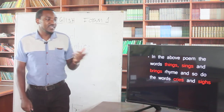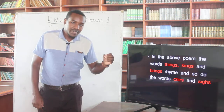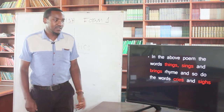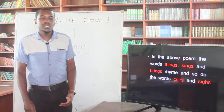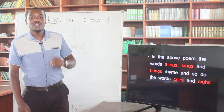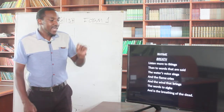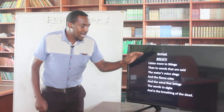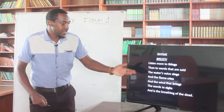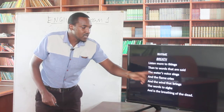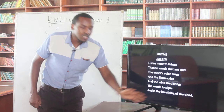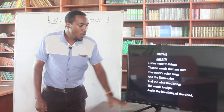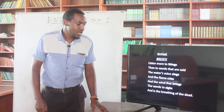So, in the above poem, we have the words things, sinks, and brings — they have the same sound at the end. Then, cries and sighs also rhyme. Rhyme is when we have the same sound at the end of lines in a poem. Remember, rhyme is not within the same sentence — it must be at the end of every single line. So, things rhymes with sinks, and also with brings; and cries rhymes with sighs.